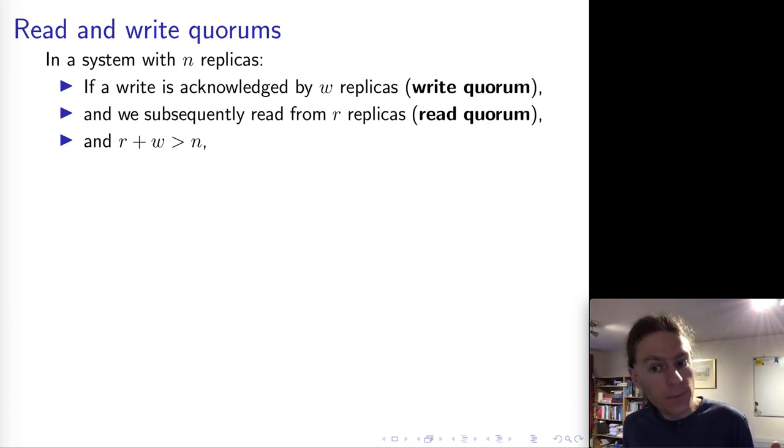And then when you read, if you get a response back from at least R replicas. So now we have W and R as our two parameters of this algorithm. And we require that the sum of W and R is strictly greater than the number of replicas in the system.